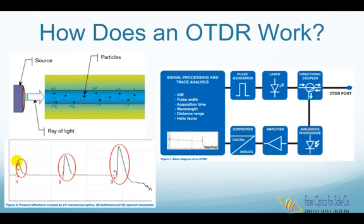Fresnel reflection can be seen as spikes in OTDR traces. Examples of such reflections are connectors, mechanical splices, bulkheads, fiber breaks, or open connectors.